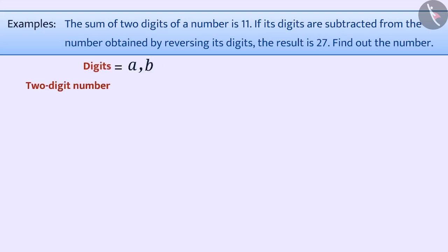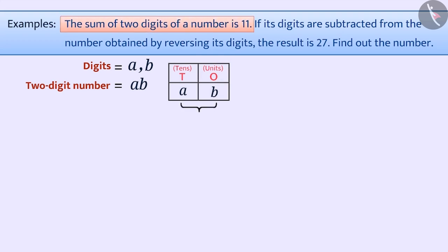Suppose a two-digit number is AB, in which A is in the tens place, and B is in the units place. Since the sum of both the digits is 11, we can say that A plus B is equal to 11. We will consider it as equation 1.